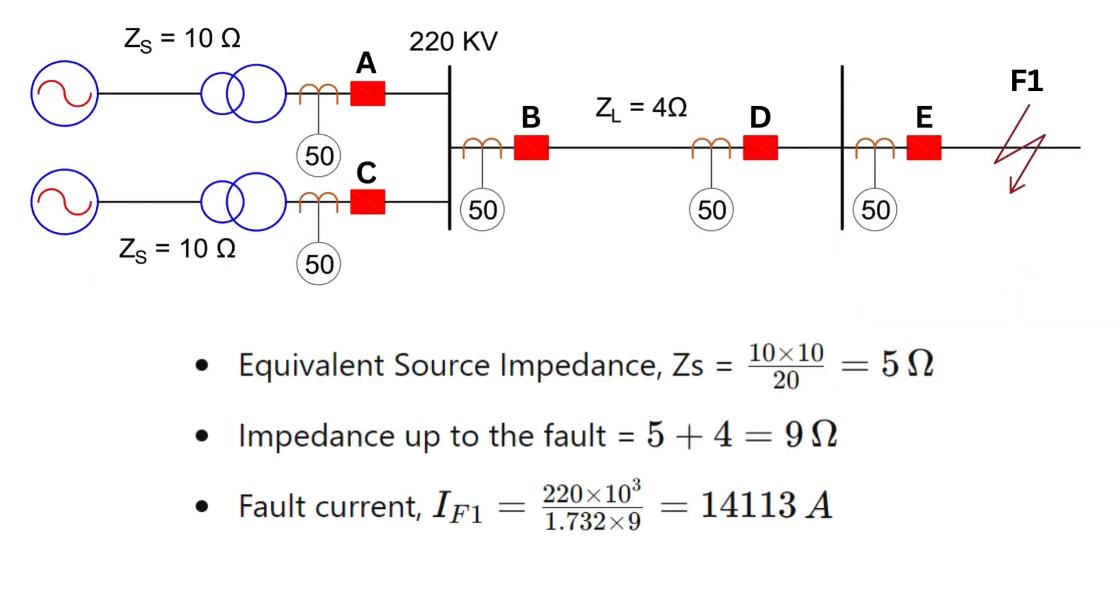For this setup, the equivalent source impedance, Zs, is equal to 5 ohms. The total impedance up to the fault point would be 9 ohms. Now, let's find the fault current at F1. IF1 is equal to 220 × 10³ divided by √3 × 9, which is equal to 14,113 amperes.